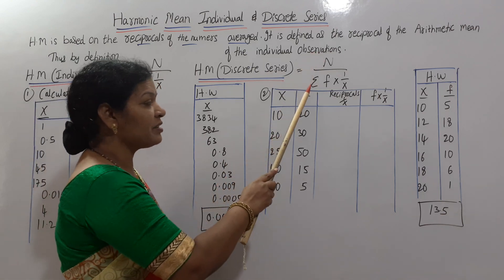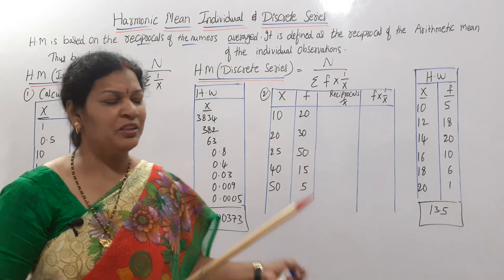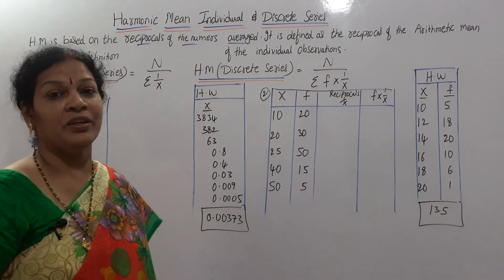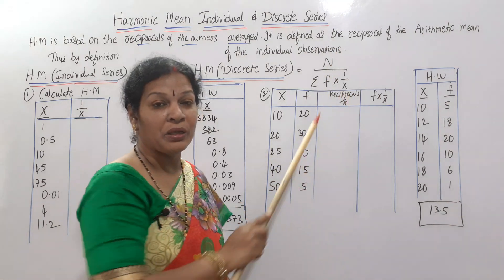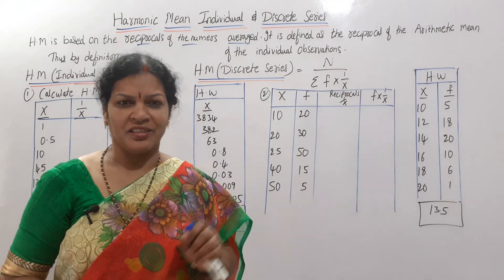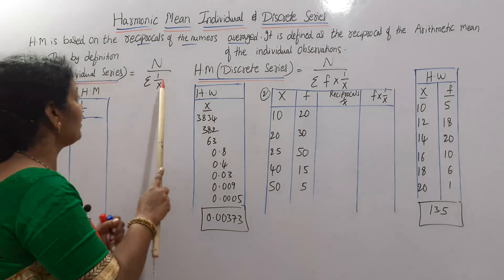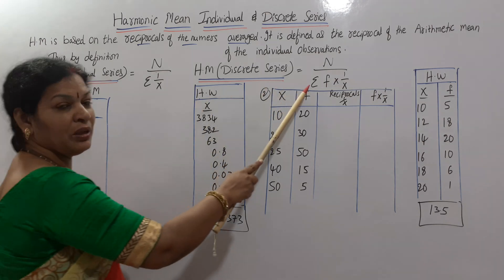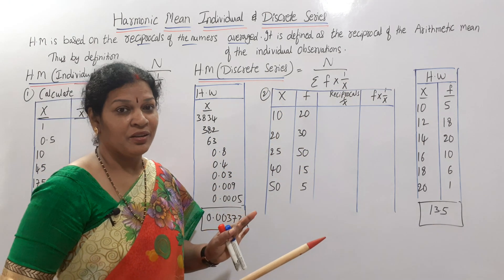For the discrete series, the formula is n / Σ(f × 1/x). It is the same as the individual series, but we are multiplying with f — the frequency. Frequency is given in discrete series and also in continuous series, that is why we multiply 1/x with frequency. So the formula is n / Σ(f × 1/x).